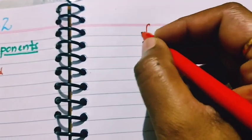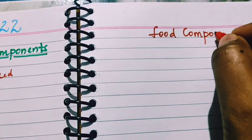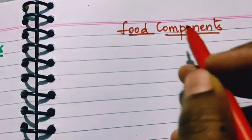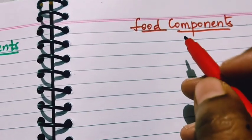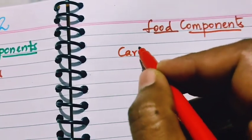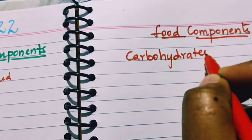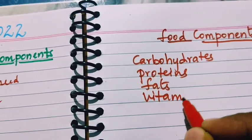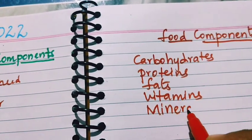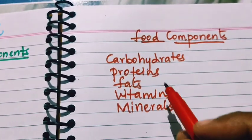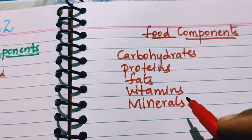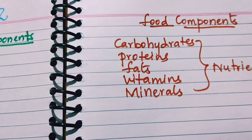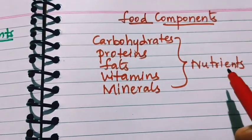Now we will see what are the different food components present in food. We eat different food items obtained from plants and animals. The different components present in food are carbohydrates, proteins, fats, vitamins, and minerals. These food components are also called nutrients.